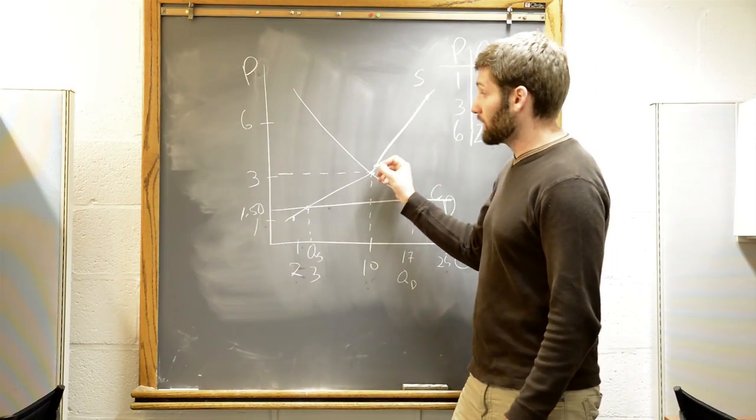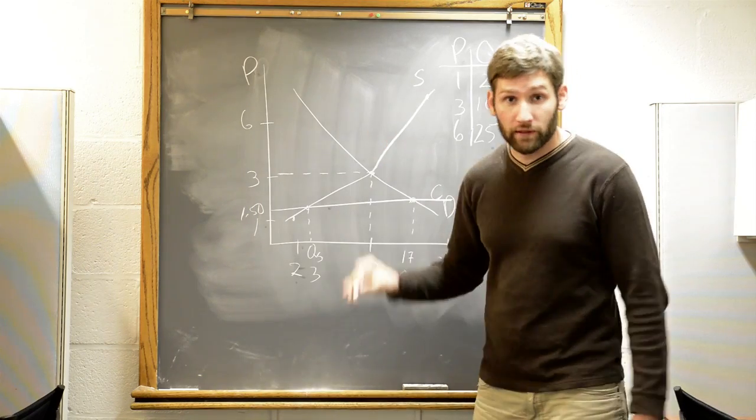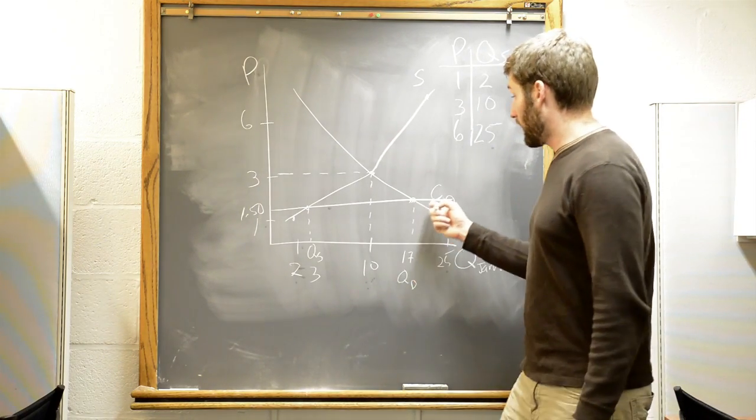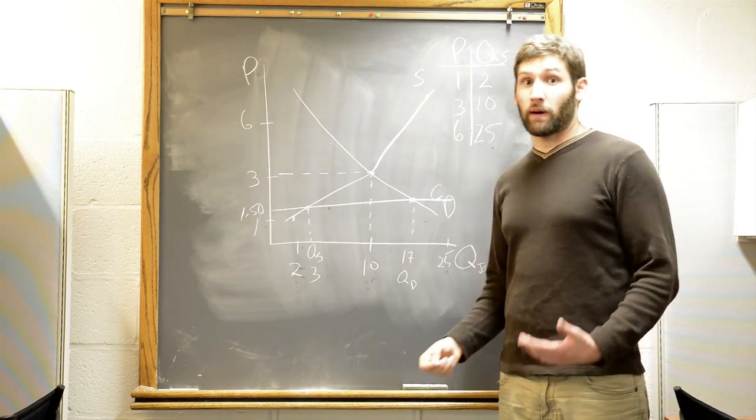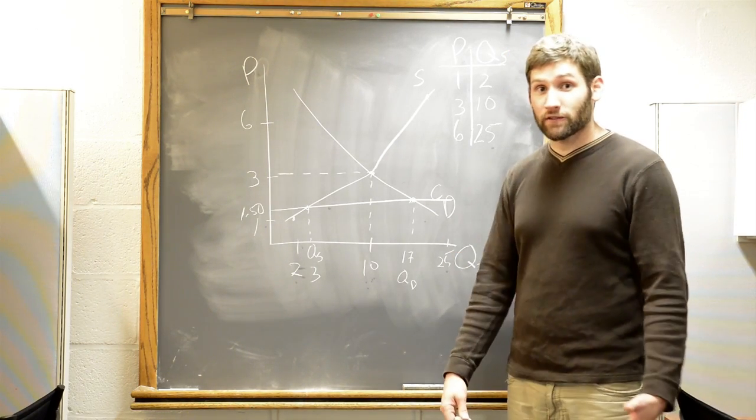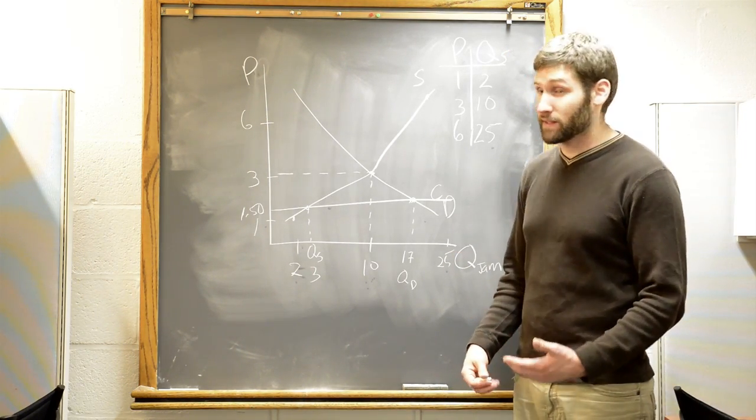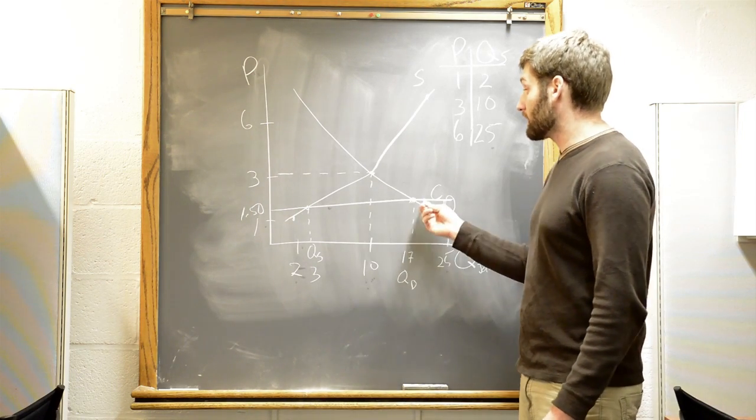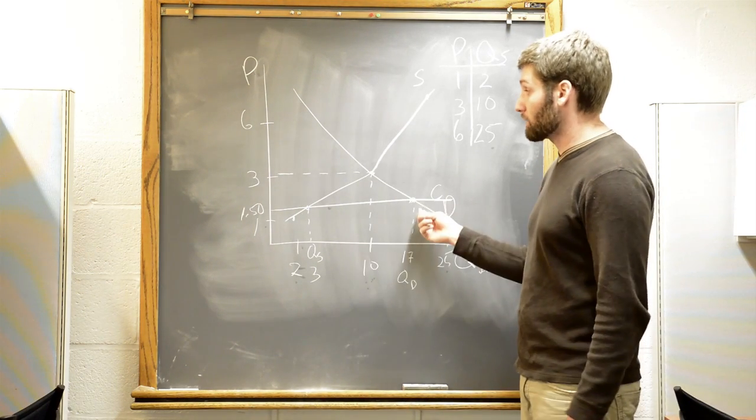Notice what happens. The price had been $3. The government forces it down. At a lower price, more people want to buy jam. Because why not? You've got your pancakes. You can throw all kinds of different jam on it because now the jam is less expensive. So our quantity demanded increases. We move along the demand curve.